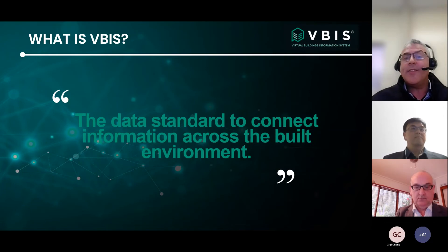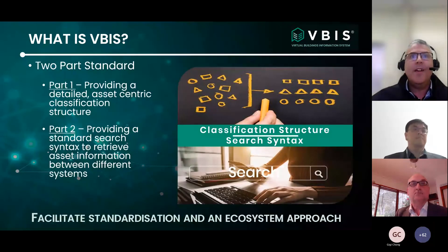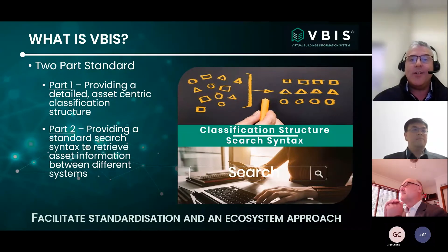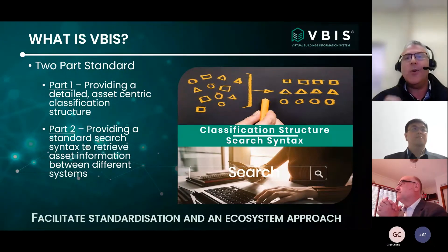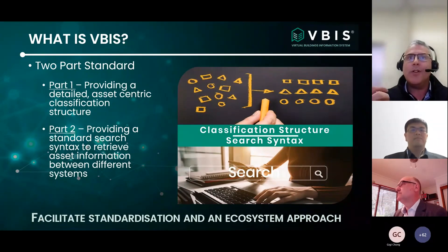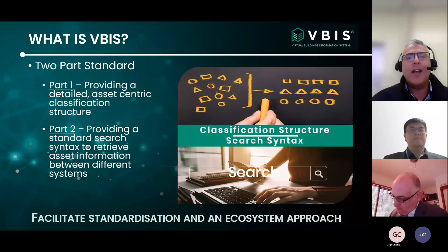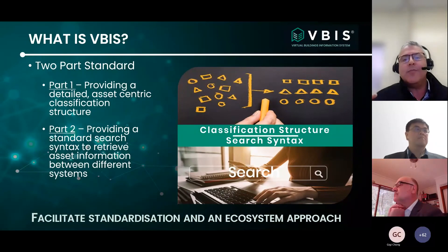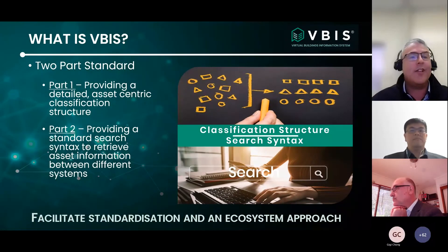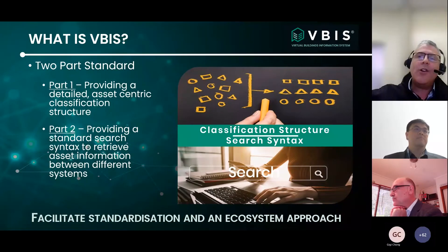VBIS is the data standard to connect information across the built environment. It's actually a two-part standard. The first part is a detailed classification structure in an orderly fashion with common terms and prescribed information to set up the industry. The second component is how do you find that information in an open structure? VBIS provides a standard search syntax to retrieve information, and we help build that out in our partnerships to get that information across open platforms so the user has information at their fingertips.